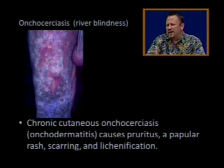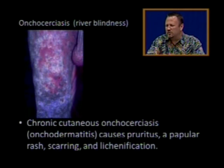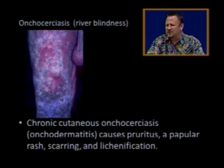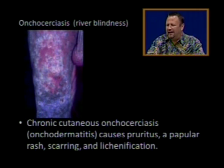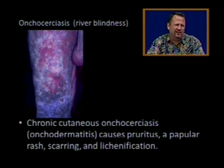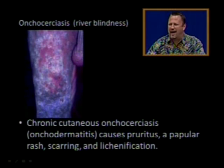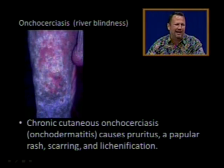Chronic cutaneous onchocerciasis, which is onchodermatitis, causes pruritus — itching — a papular rash, scarring, and lichenification. Lichenification is a skin change causing white patches, like lichens.